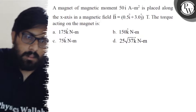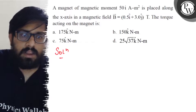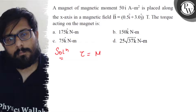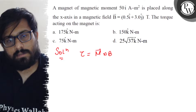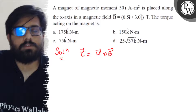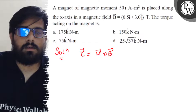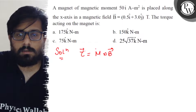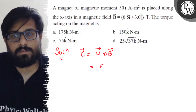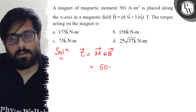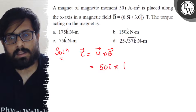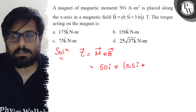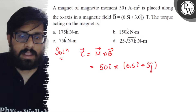In this question, we know that the torque is nothing but m⃗ cross B⃗. So in vector form, the value of torque is m⃗ cross B⃗. Now the m⃗ vector is 50 î, and B⃗ is 0.5 î plus 3 ĵ. So we compute 50 î cross (0.5 î plus 3 ĵ).